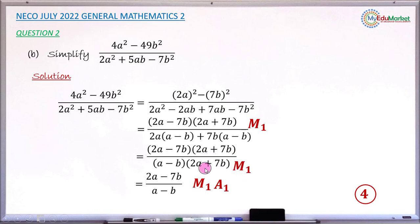Canceling the common factors that you have between numerator and denominator gives you this method one mark. And when you have the correct answer as 2a - 7b over a - b, this gives you this accuracy one mark. So in total, this question carries four good marks.